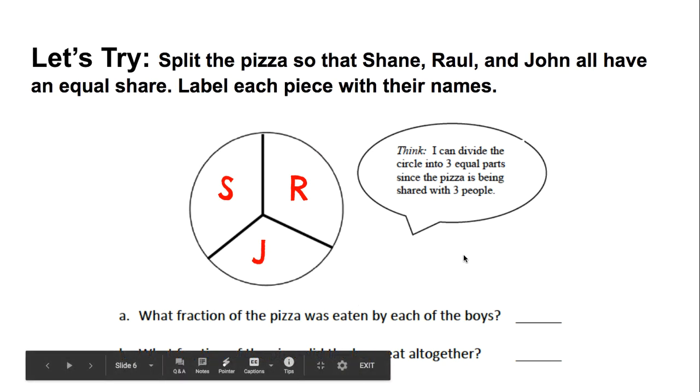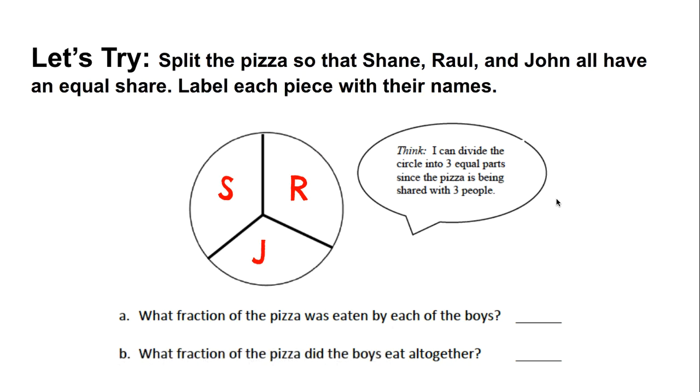Now what fraction of the pizza was eaten by each of the boys? The key word there is each. How many friends are there? One, two and three. So there's three friends. One whole and it's broken up into three different equal shares, so it's broken up into thirds. If each boy only got one slice of this pizza, they've eaten one third of the pizza. So each friend ate only one third of the pizza.